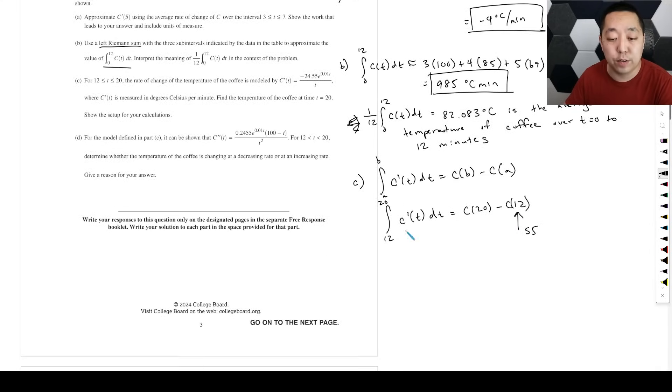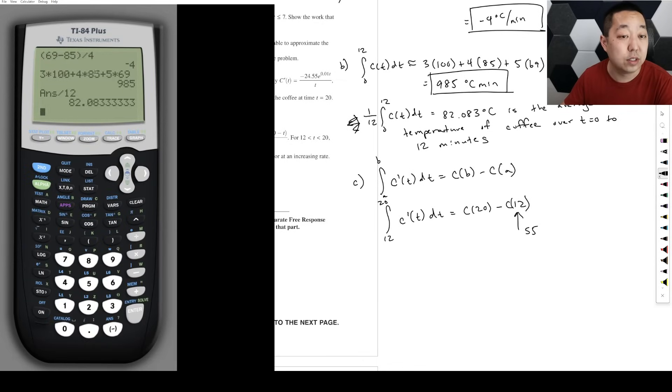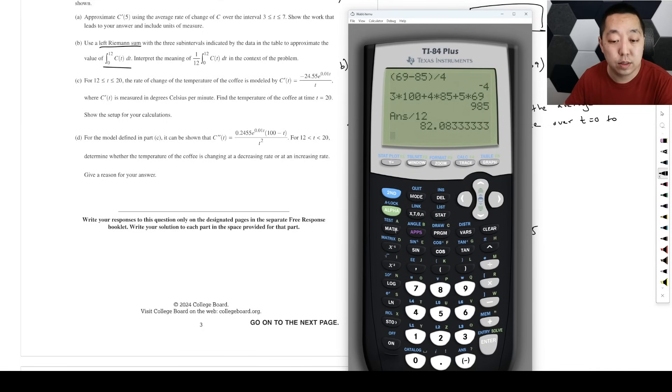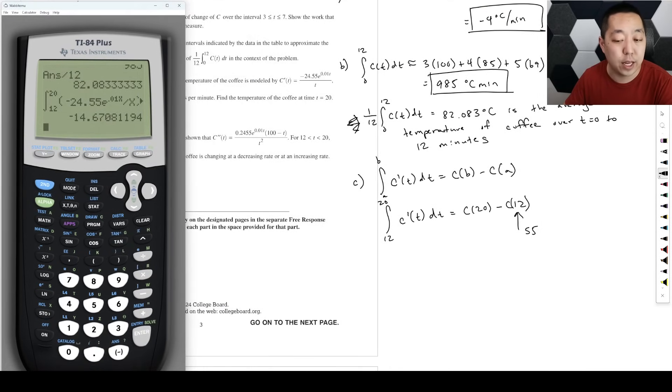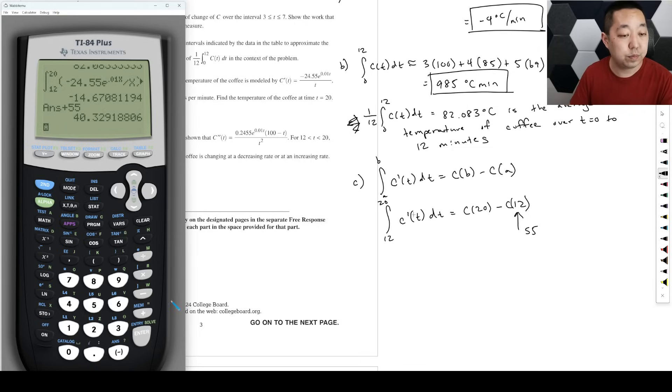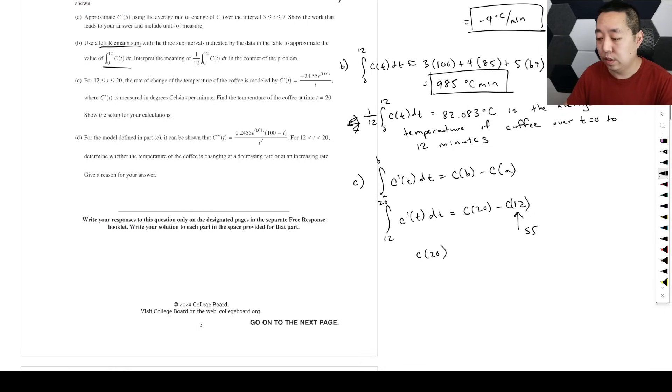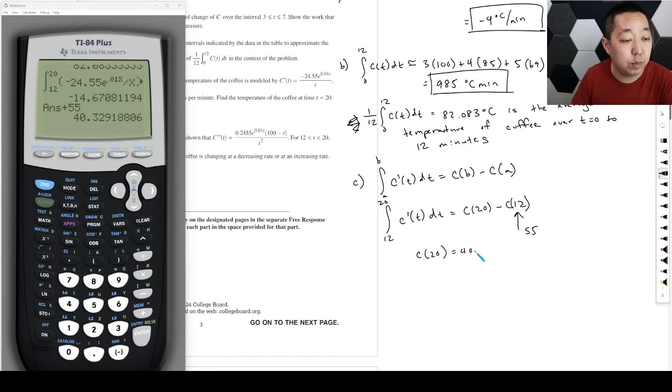To figure this out, we're just going to use our calculator to integrate this portion. We're going to integrate this function from 12 to 20: negative 24.55 e to the 0.01X, and then divide that—on the denominator is X on the bottom. So that means we're going to drop that temperature, but we're going to add in 55, and that's going to give me C(20) equals 40.329 degrees Celsius. That is the temperature there.